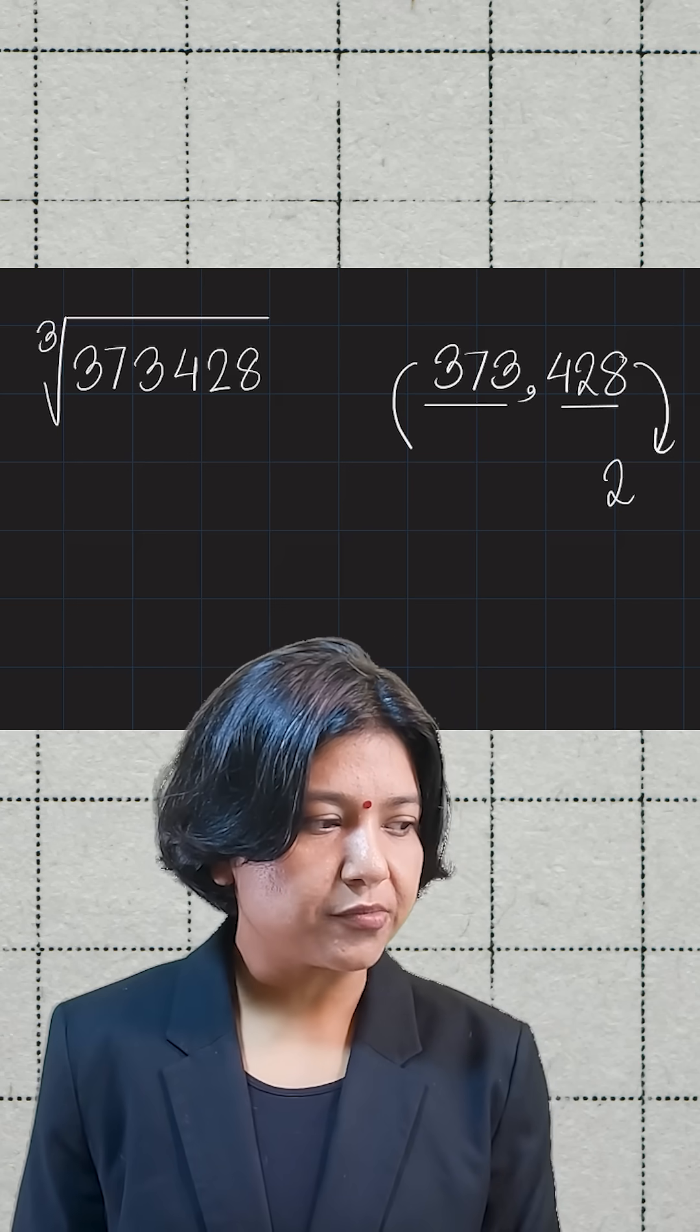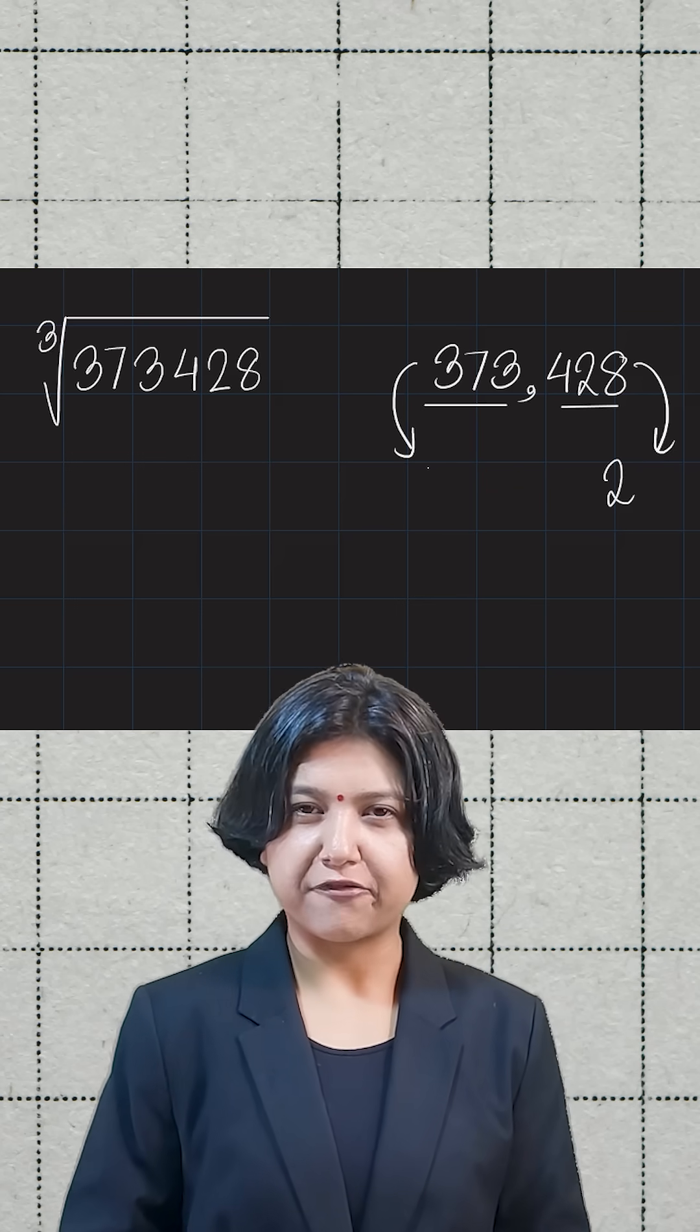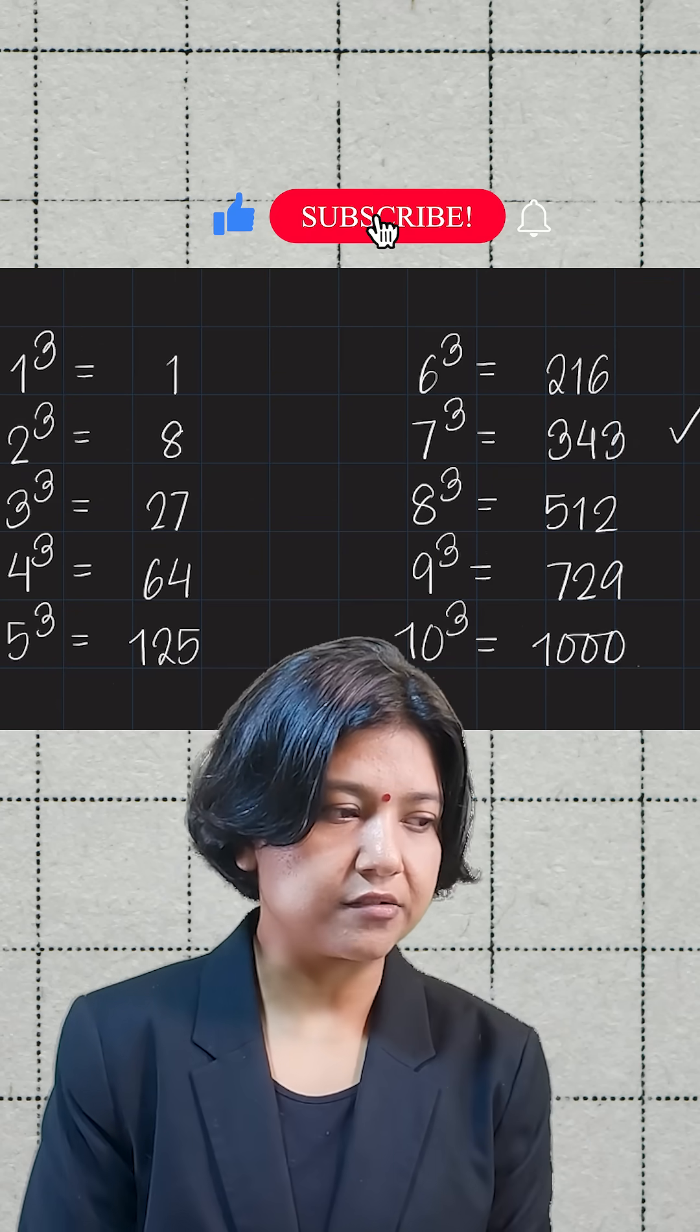And now I look at the next group, 373. 373 does lie closest to one of the cube numbers that we have for those 10 numbers. Let's have a look. We know that cube of 7 is 343.